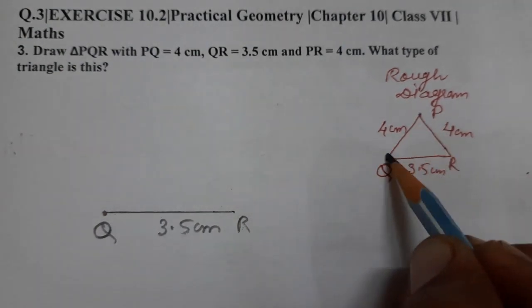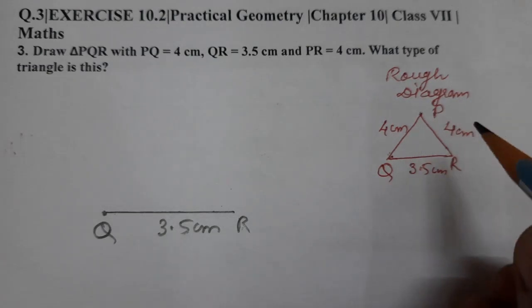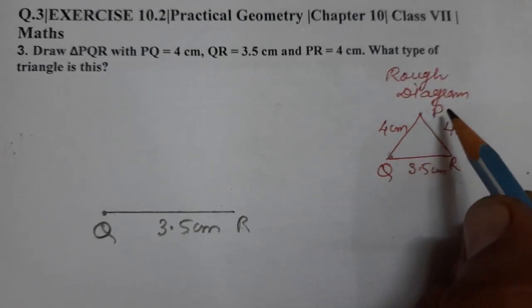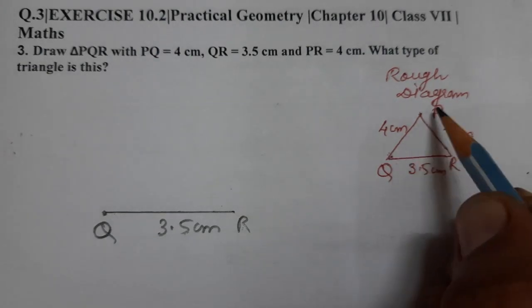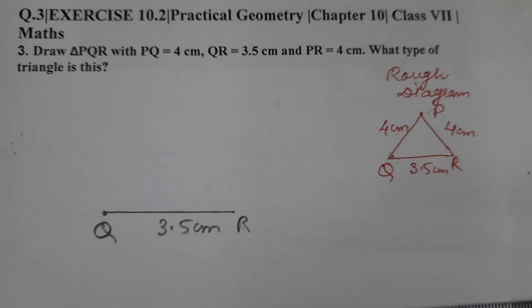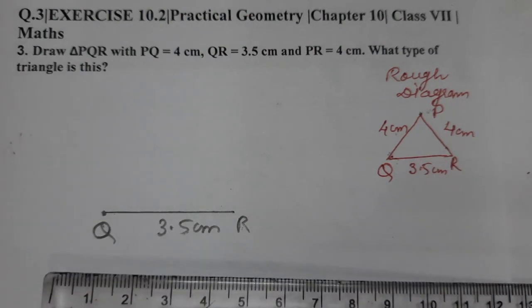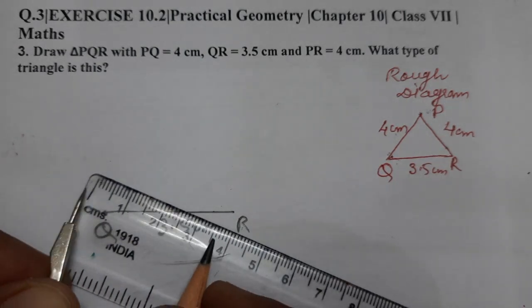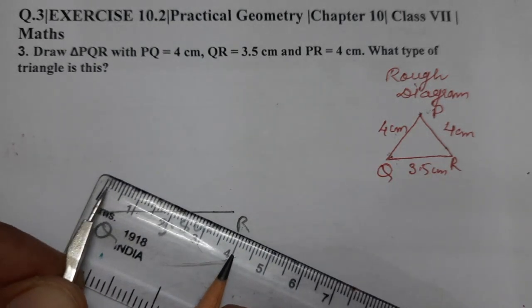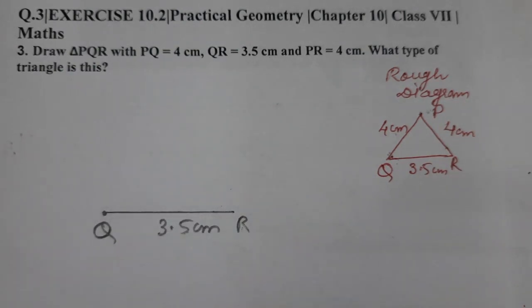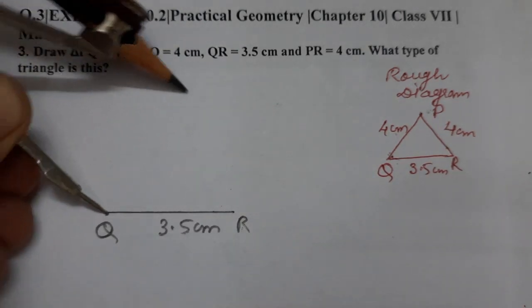Now, with Q as center and arc radius 4 centimeter, this is 4 centimeter. With Q as center and arc radius 4 centimeter, draw an arc like this.